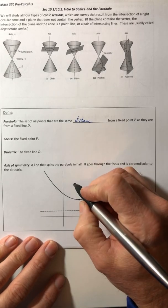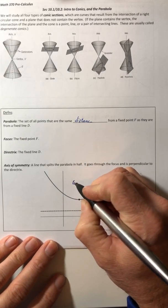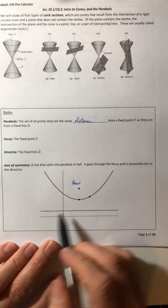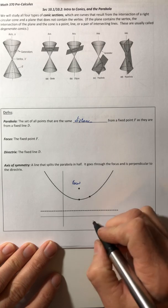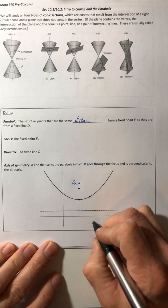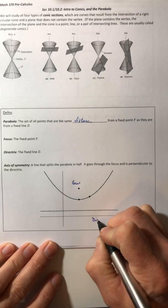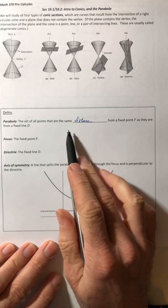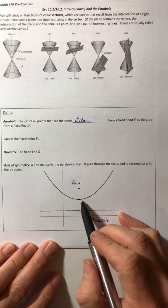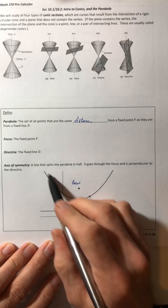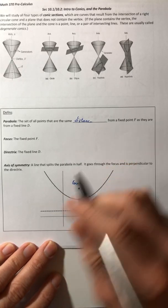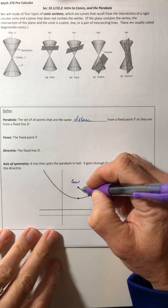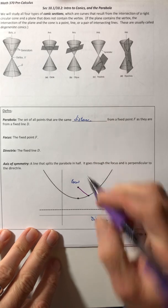So out here we have the focus. So the focus sits inside the parabola and then this dashed line here, that is your directrix.